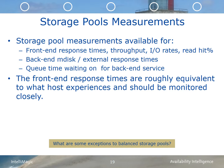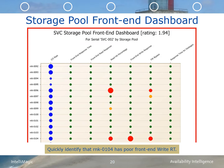It's important to understand how these measurements relate to the user experience. The front-end response times are roughly equivalent to what is experienced by the user, so they should be closely monitored. The back-end response times report the response times as seen by the SVC in its communications with the back-end storage. High back-end storage system times will impact the front-end response times, particularly for read-miss activity. This chart provides a sample of the key storage pool availability metrics: IO rate, front-end response time, front-end read response time, read hit percentage, front-end write response time, fast write bypass, and response time for destages.